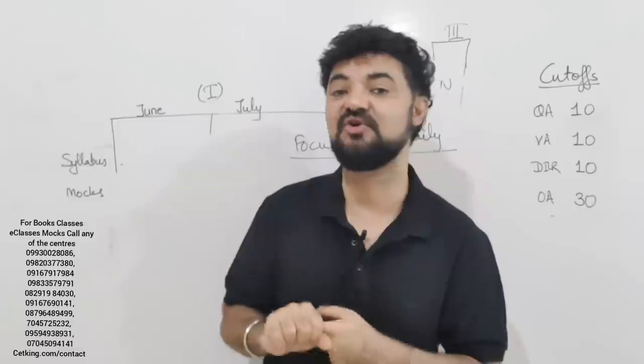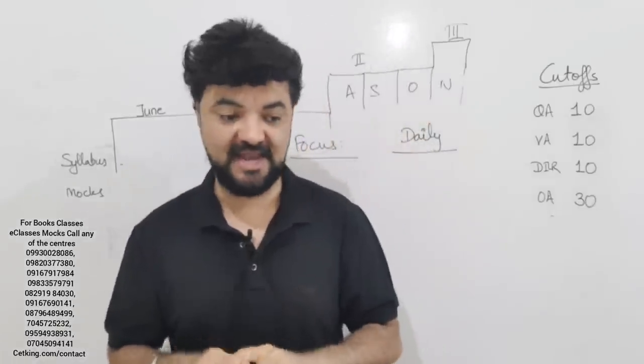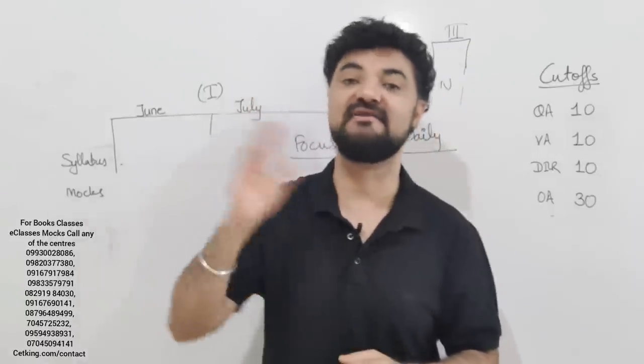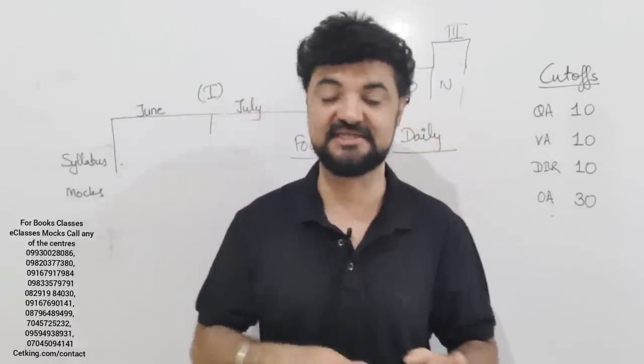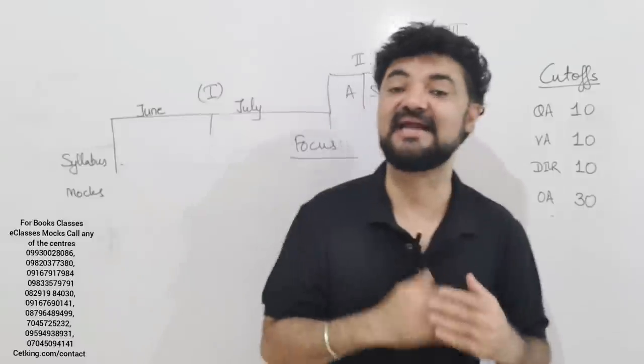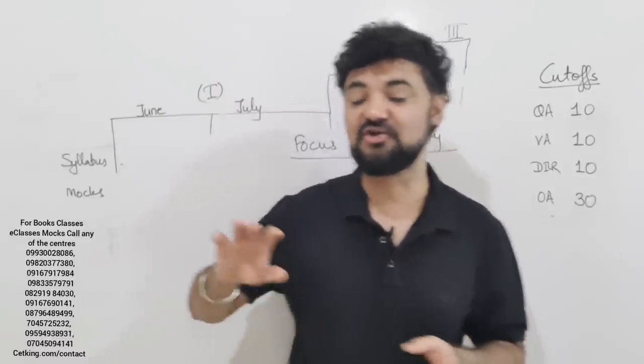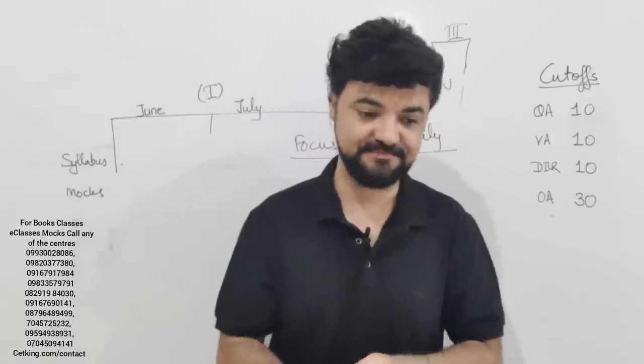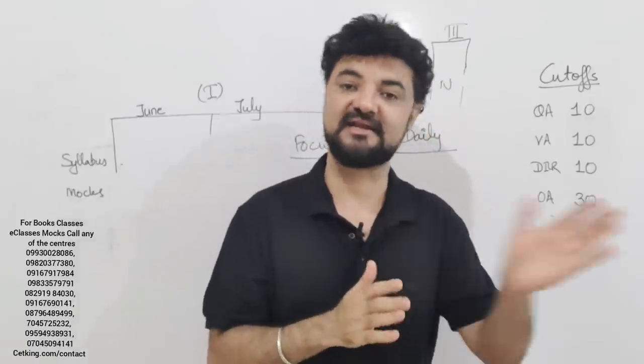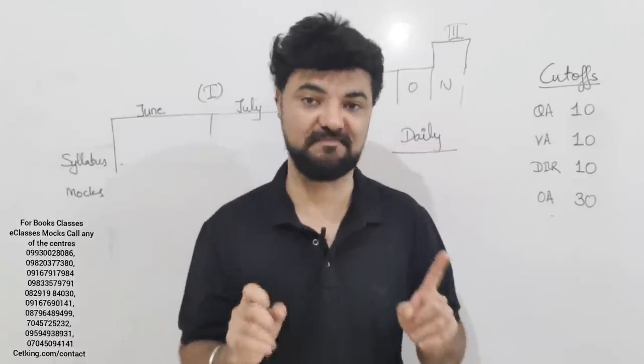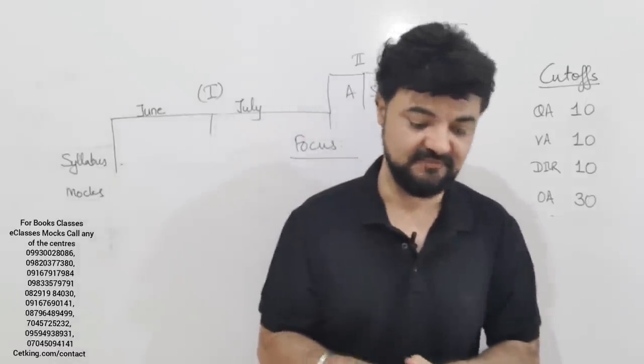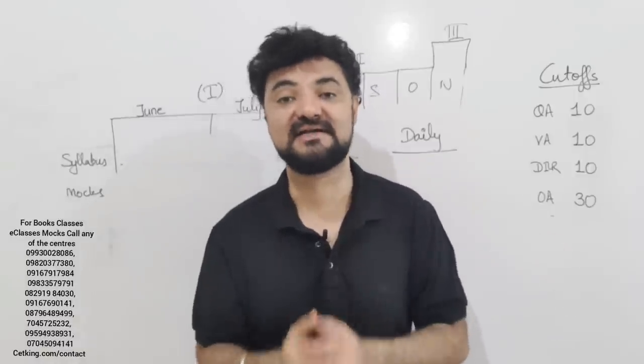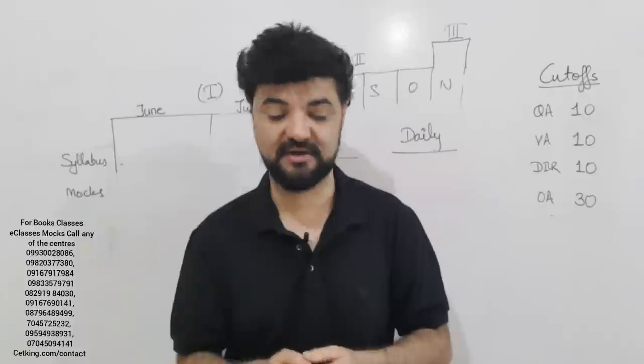So, how to strategize yourself? Engineers' main problem is going to be verbal, and then quant. Quant is not the main problem because of two reasons. A, we have done higher level maths, complex numbers, we have done integration. Those who have taken non-engineering, BMS, BCom, BBA, BA, they went into that line because one of the main reason was the hate for maths. Toh unko maths ka dar hai. Hum mein maths ka dar nahi hai. Maths has to be a strong area.